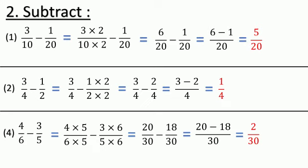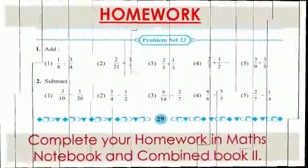In this way you solve subtraction problems — convert unlike fractions into like fractions, then do the subtraction. I have explained addition and subtraction of unlike fractions: first convert into like fractions, then do addition or subtraction according to the sign in the question. Now your homework is problem set 22. Question 1 — add: first, second, third I explained in the video; fourth and fifth do on your own. Question 2 — subtract: first, second, and fourth I explained; third and fifth do on your own.